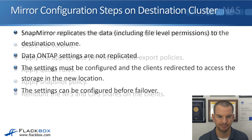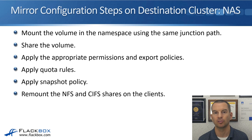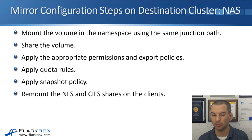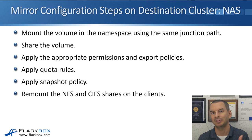There is another solution called SnapMirror for SVM which will replicate both the data and the ONTAP settings — I'll talk about that in a later lecture. When using standard DP mirrors and failing over to the DR site, you need to configure the ONTAP settings for the data to be accessible. For NAS protocols you'll need to: mount the volumes into the namespace using the same junction path as the source, share the volume, apply appropriate permissions and export policies, apply quota rules, apply the snapshot policy, and remount the NFS and CIFS shares on the clients.